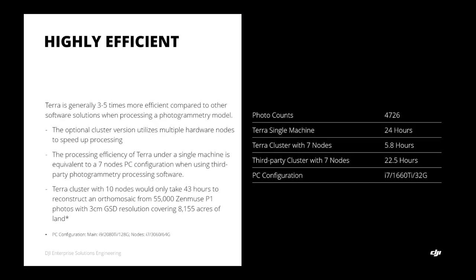DJI Terra software is generally three to five times more efficient compared to other photogrammetry processing tools on the market. Based on project scale, users can upgrade their hardware and use the cluster version of DJI Terra to improve processing efficiency. For reference, Terra under a single machine is equivalent to a 7-node PC configuration when using third-party photogrammetry software. Terra cluster version with 10 nodes would only take 43 hours to reconstruct a massive ortho-mosaic project containing over 55,000 Zenmuse P1 images, producing 3 cm GSD resolution and covering over 8,000 acres.